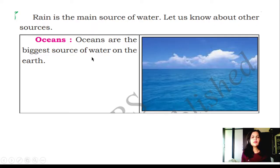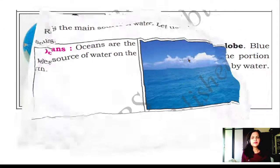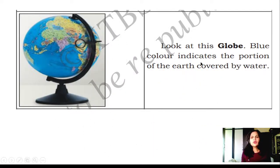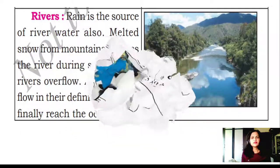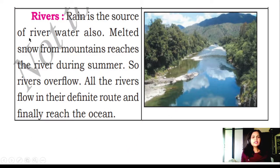Oceans are the biggest source of water on the earth. Look at this globe. Blue color indicates the portion of the earth covered by water. Rivers: Rain is the source of river water also. Melted snow from the mountains reaches the river during summer, so rivers overflow. All rivers flow in their definite route and finally reach the ocean.